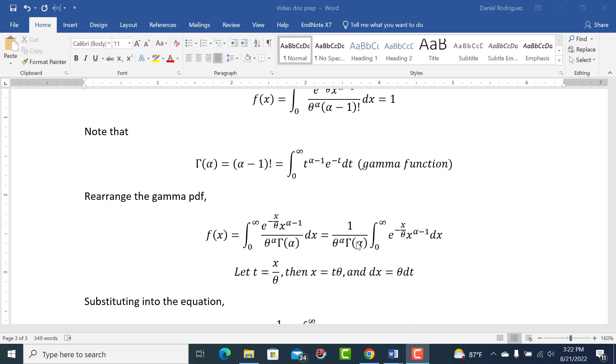So we have one, and we can pull this out of the integration, because the integration doesn't involve that. These are all constant terms, so one over theta to the alpha, gamma of alpha. We can pull that out of this integration. And we're left with this bad boy over here.